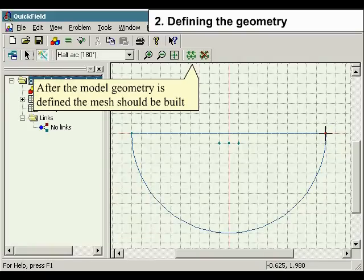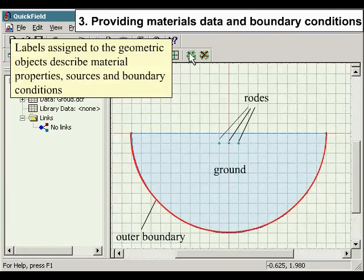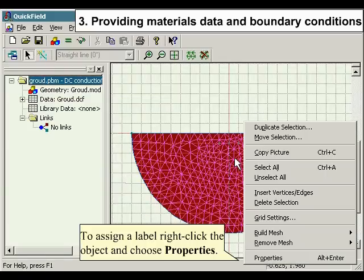After the model geometry is defined the mesh should be built. Labels assigned to the geometric model describe material properties, sources and boundary conditions. To assign a label right-click the object and choose properties.